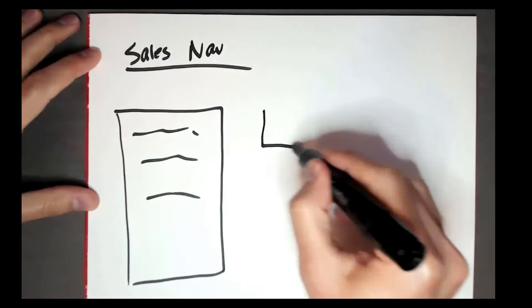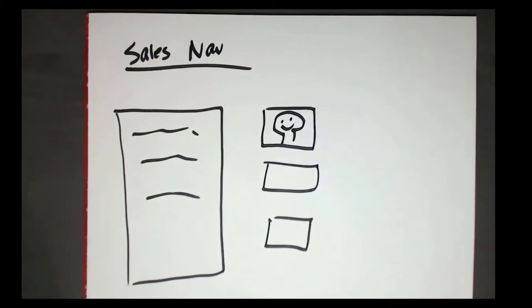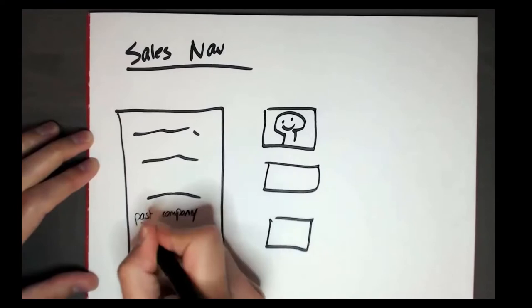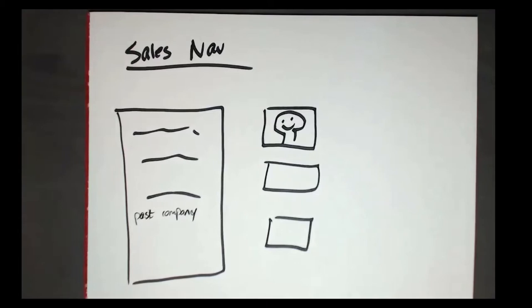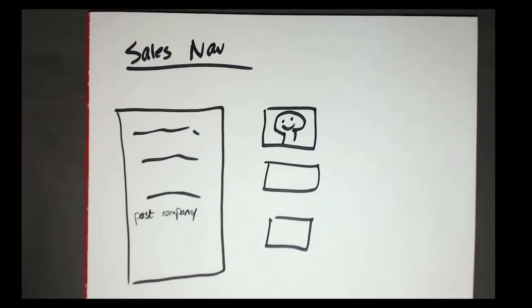On this side you've got filters, and here you have individual searches — your people and that kind of stuff. There are a couple of filters I recommend using that are going to help you get what I call low-hanging fruit. One of them is a filter called 'Past Company.'